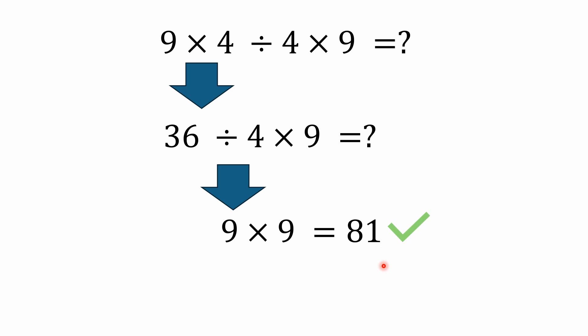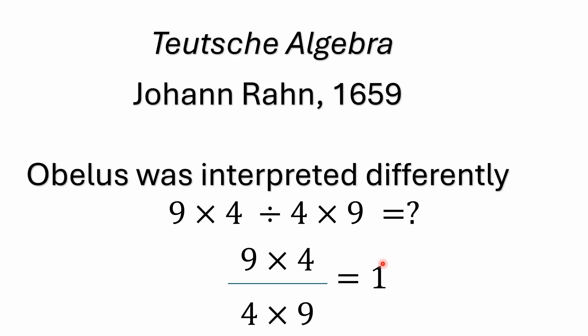Where you run into some differences in interpretation — and you can look this up — there's a book called Teuths Algebra from Johann Rahn from all the way back in 1659. There's a lot of information about this book. The obelus was basically interpreted differently. This symbol — with the horizontal line and two dots — basically represents a numerator and denominator. The old interpretation was that 9 times 4 was looked at as being all in the numerator, and everything to the right would be in the denominator.